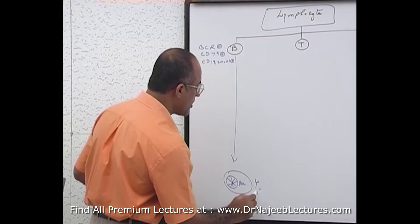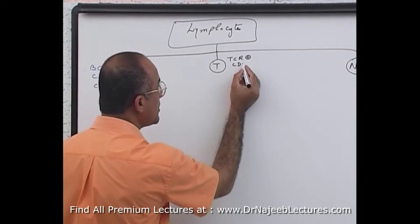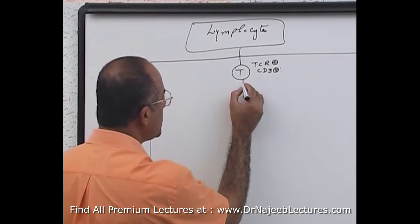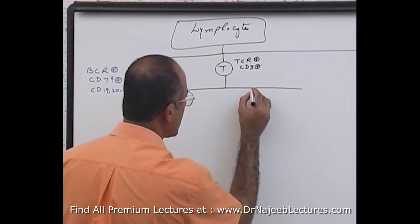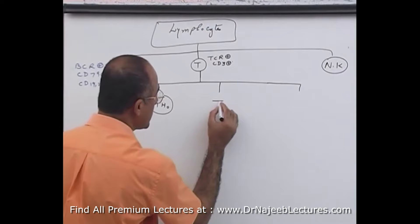T cells: all T cells are TCR positive and all T cells are CD3 positive. T cells can be divided further into T helper cells, T regulatory cells or T suppressor cells, and T cytotoxic cells.